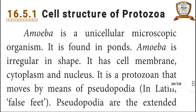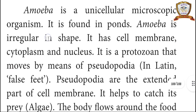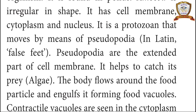Cell structure of Protozoa. Amoeba is a unicellular microscopic organism found in ponds. It is irregular in shape. It has a cell membrane, cytoplasm, and nucleus. It is a protozoan that moves by means of pseudopodia — in Latin, 'false feet'. Pseudopodia are the extended parts of the cell membrane.